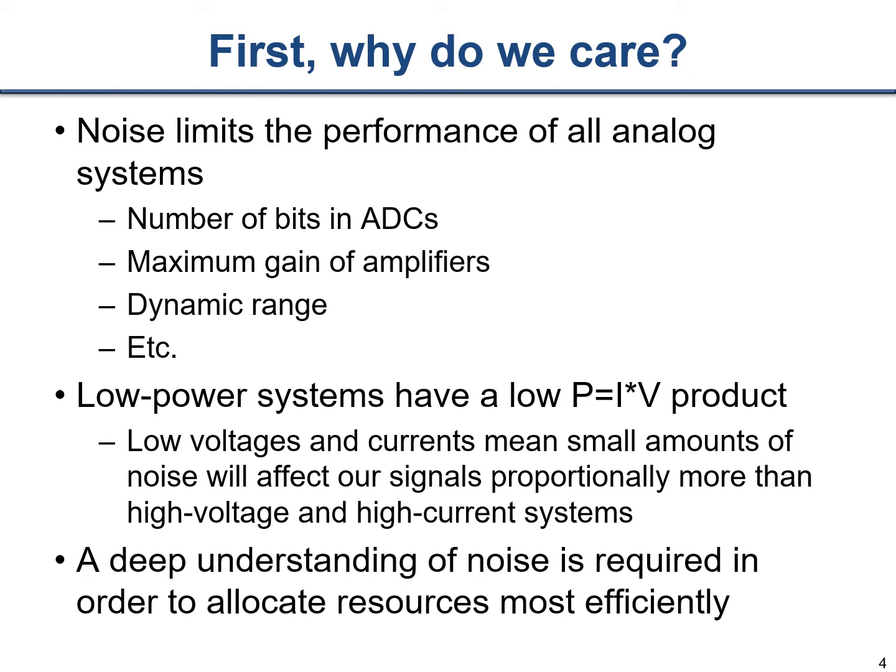So what is noise and why do we care? It ultimately limits the performance of all analog systems. It limits the number of bits in an analog-to-digital converter, and even the maximum gain of an amplifier. With a fixed power supply voltage, the gain can't be higher than the supply voltage divided by the input-referred noise — otherwise the noise itself would amplify up to the rails and saturate the amplifier. Noise also limits dynamic range and any high-level performance aspect of an analog system.